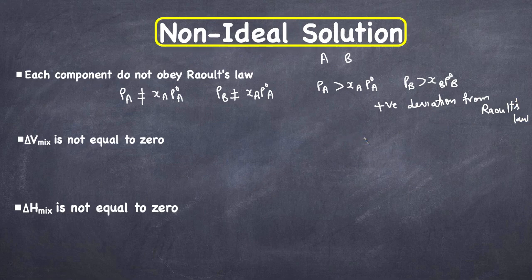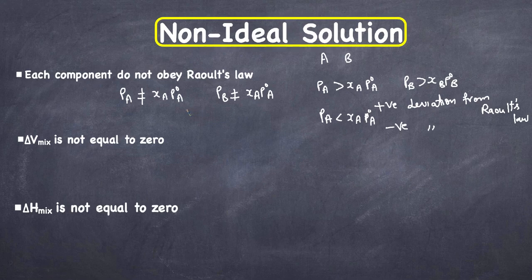The second type is when the vapor pressure is less than what is expected from Raoult's law. In this case it is called a negative deviation from Raoult's law. So the vapor pressure of such a solution is either higher or lower than that predicted by Raoult's law.